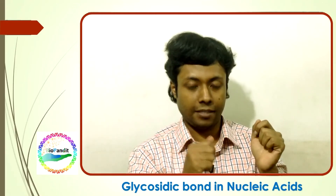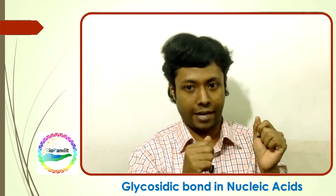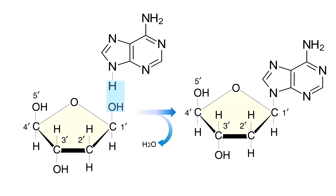Let us see the chemical reaction now. As you can see, this is a condensation reaction, meaning water is released. The water includes the hydroxyl group of the deoxyribose sugar and the hydrogen associated with the N9 atom of the purine or with the N1 atom of the pyrimidine.